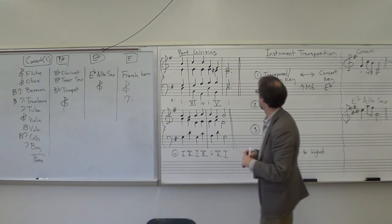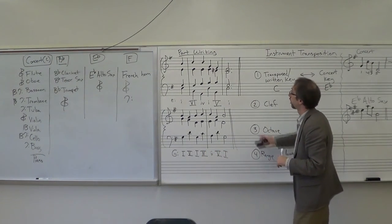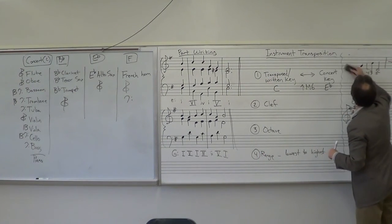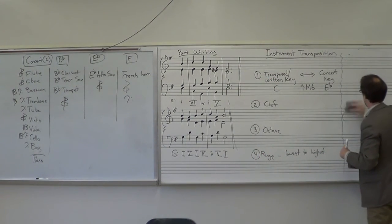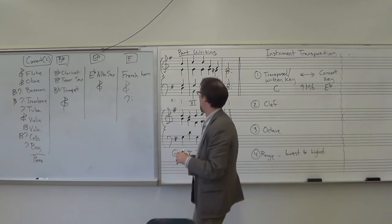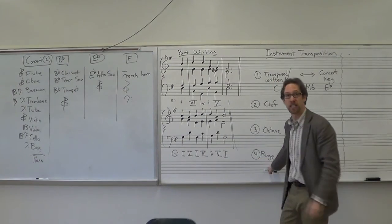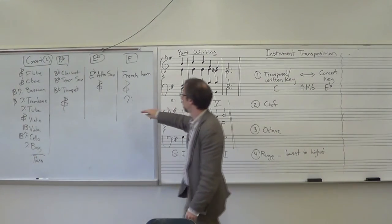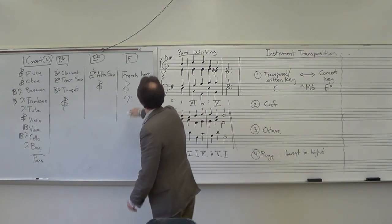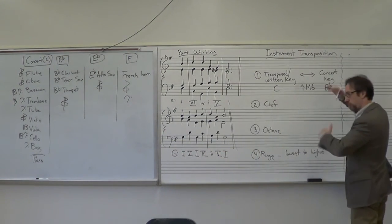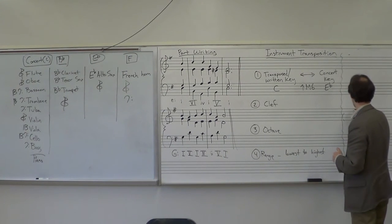So let's take, as an example, this part writing example we just did. And instead of having it for piano, let's pick instruments that have the appropriate range. And range is something you'll have to, you can look up online. Let's put French horn, which is a medium instrument, medium pitch level instrument.